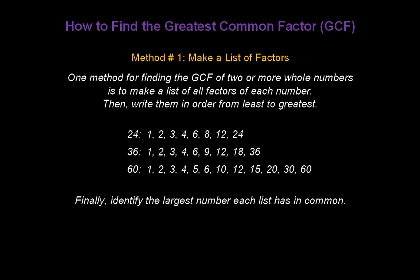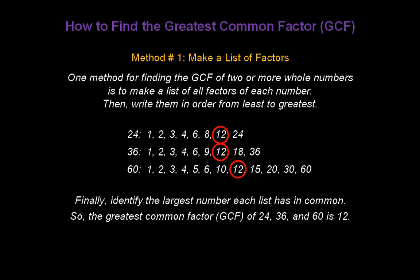Finally, all I have to do is identify the largest number that each list has in common. Take a look at all three lists. What's the largest number in common with all three? It's the number 12. So the Greatest Common Factor, or GCF, of 24, 36, and 60 is 12.